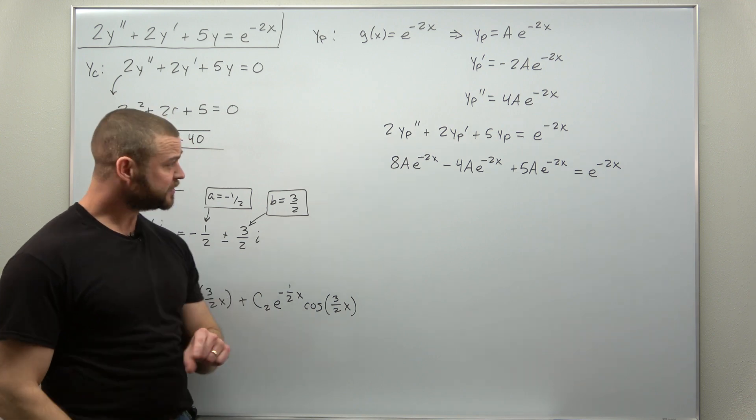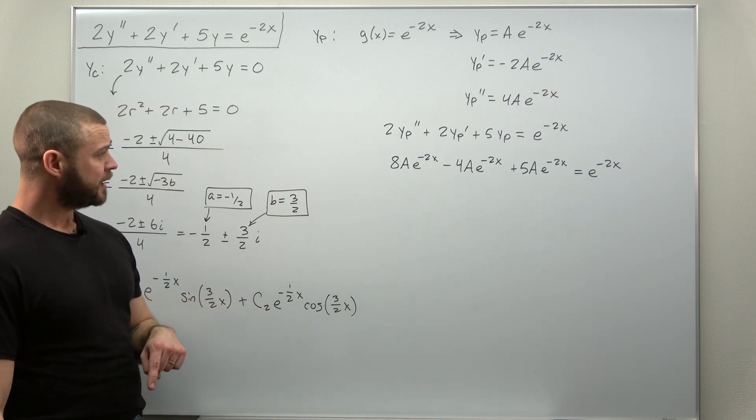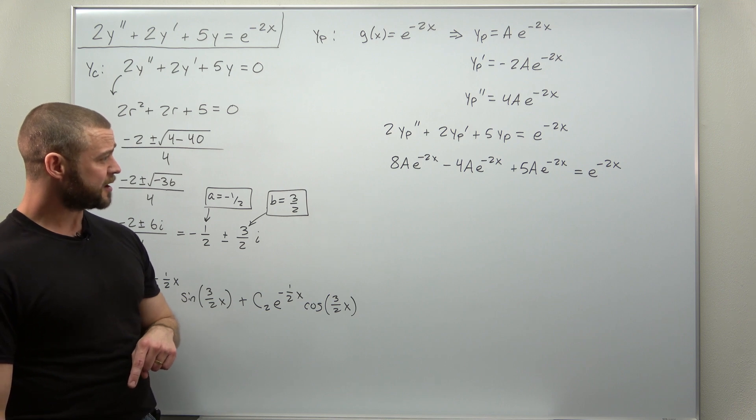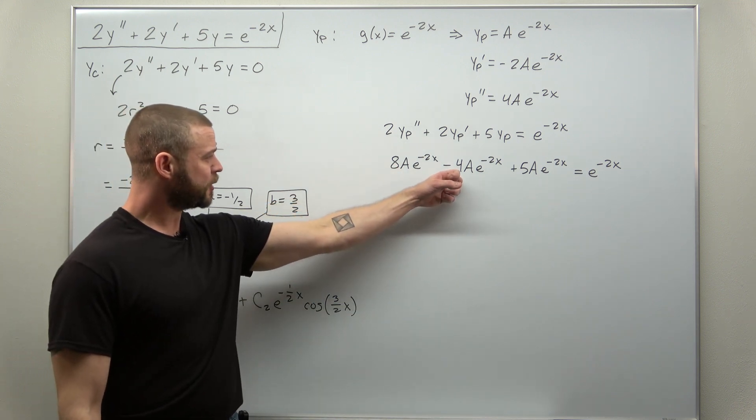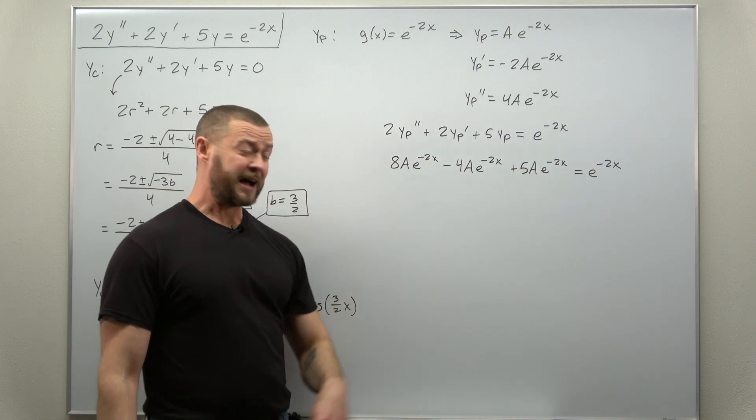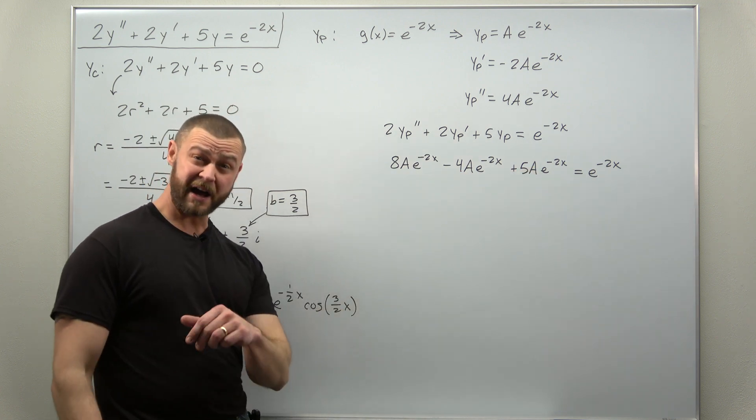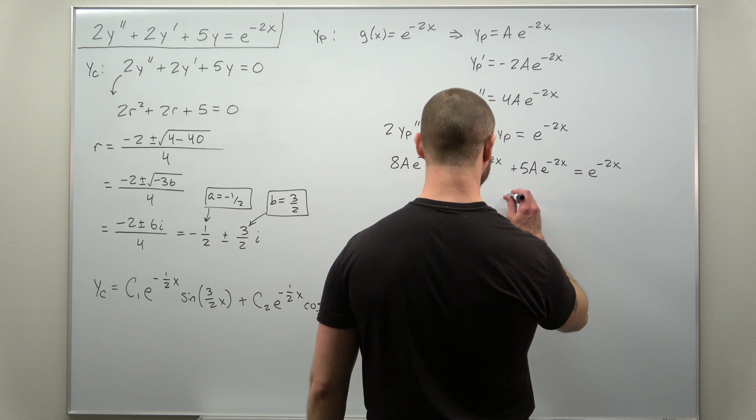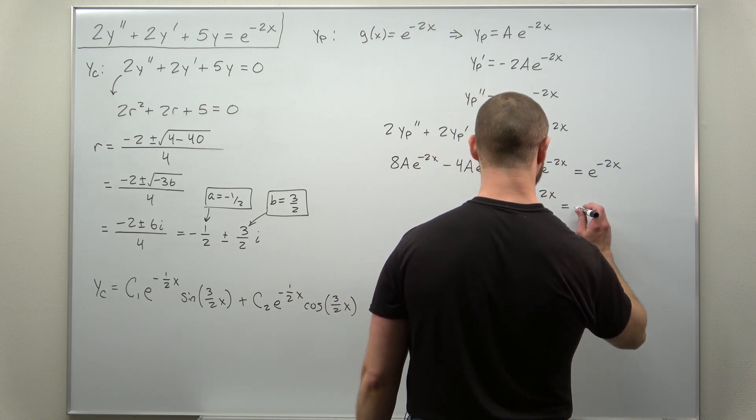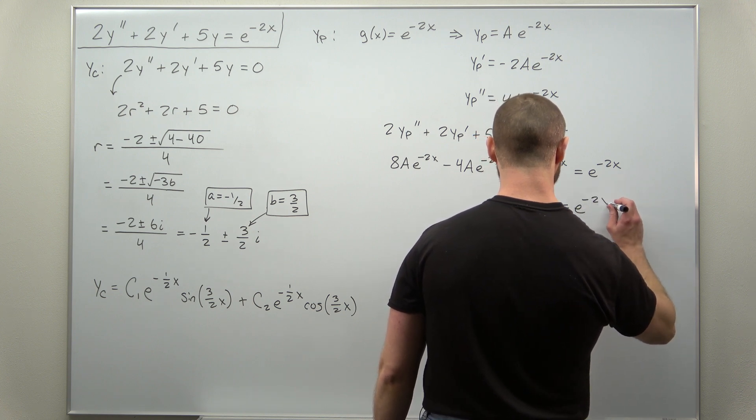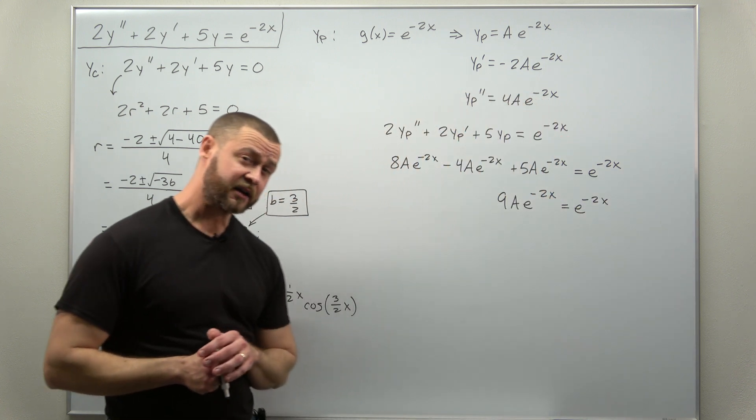All right, looks like we can clean this up a little bit. If we do some basic math here, what do we get here? We have 8a minus 4a plus 5a. What is that? 9a times the exponential. So 9a e to the negative 2x equals e to the negative 2x.